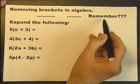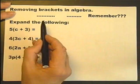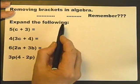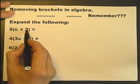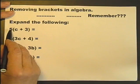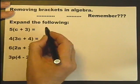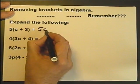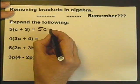So let's just see if you remember how to expand brackets. Expand the following brackets. Everything inside the bracket is multiplied by what's outside the bracket. So in this case, the C needs to be multiplied by the 5, and the plus 3 needs to be multiplied by the 5.